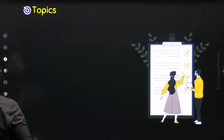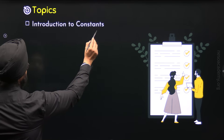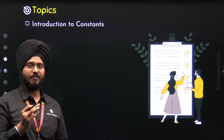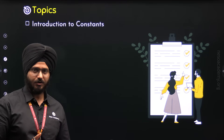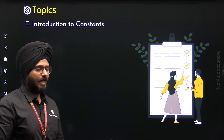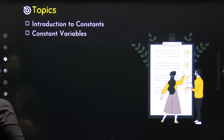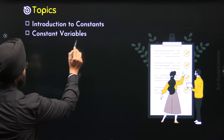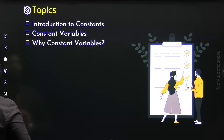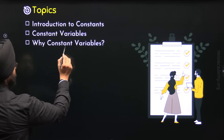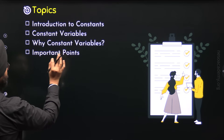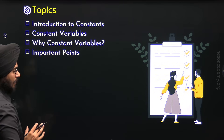The first topic of this lecture is Introduction to Constants. I will introduce you to constants, explaining what a constant is and what are the different types of constants we have. Then we will move to the next topic where we will understand constant variables in great detail. In the third topic, we will understand why we need constant variables. And finally, we will understand important points about constant variables.